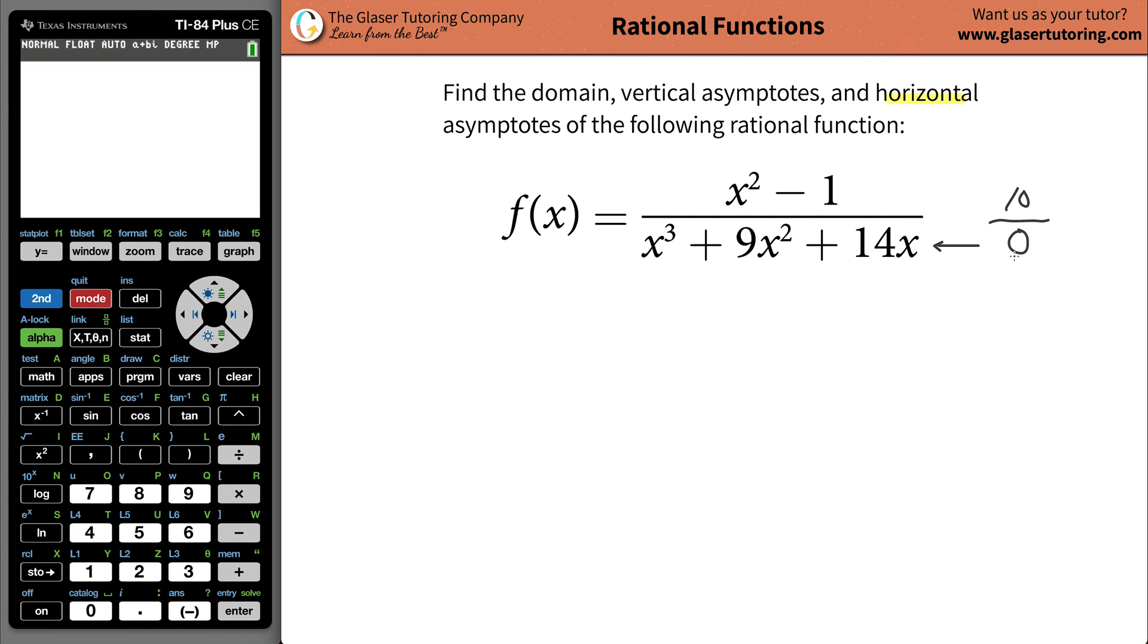This having a zero in the denominator will give an undefined result. So what we need to do now is we need to set this thing equal to zero and solve. Now what's probably the best way to do this? So we have x cubed plus 9x squared plus 14x equaling zero.